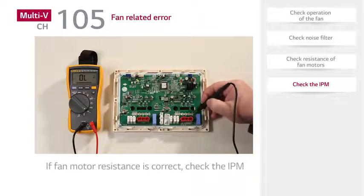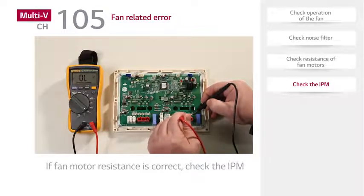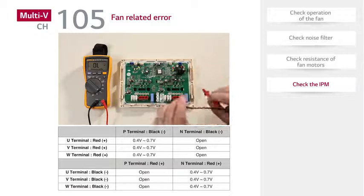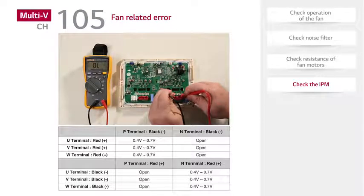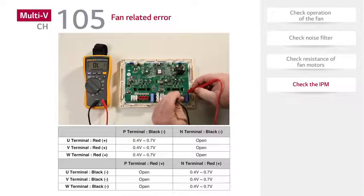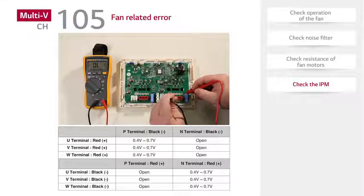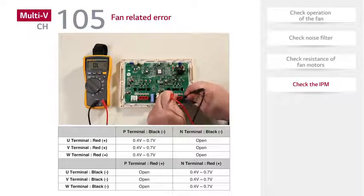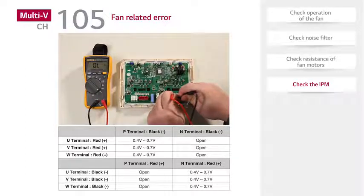If the fan motor resistance is correct, test the fan IPM. If readings are outside these ranges, replace the fan IPM.